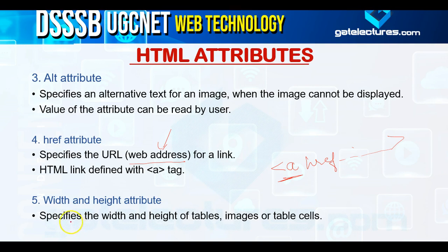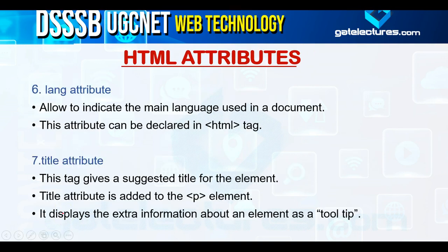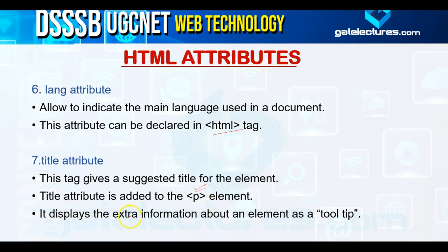The width and height attributes specify the height and width of a table, image, or table cells. The language attribute allows you to indicate the main language used in a document — for example, if you use English in your HTML, you specify the language in the HTML tag. The title attribute gives a suggested title for the element and displays extra information as a tooltip.